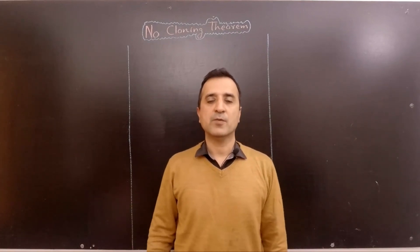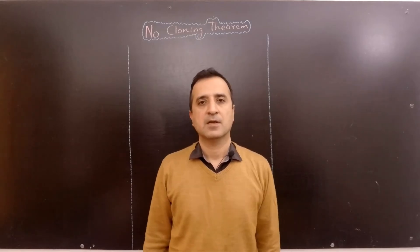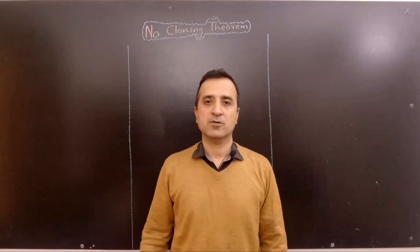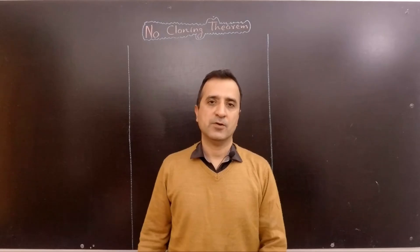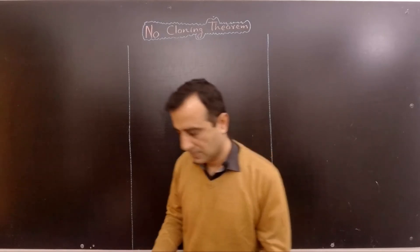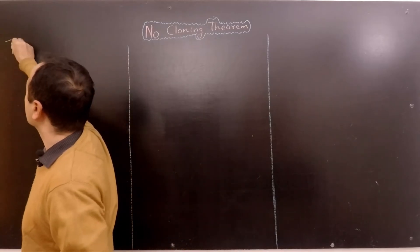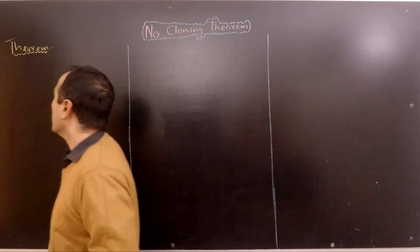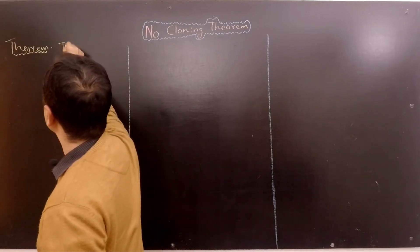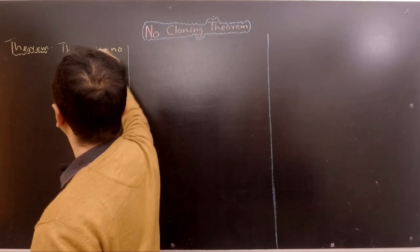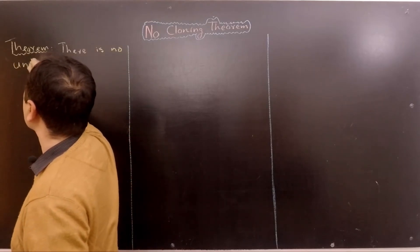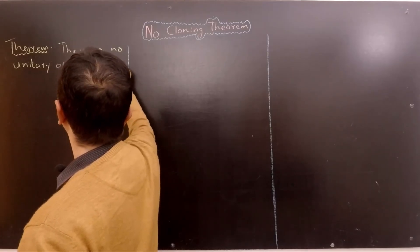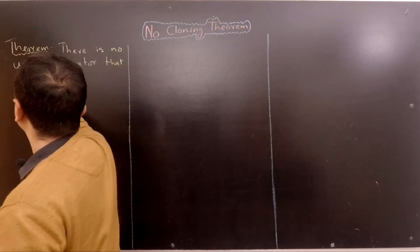In this video, I will provide two different proofs of the no-cloning theorem. At the end of the video, I will also discuss what can be achieved if cloning is possible. So stay tuned till the end of the video. Let's start with the theorem. The no-cloning theorem states that there is no unitary operator that can clone arbitrary qubits.